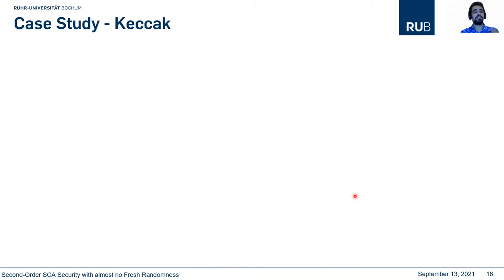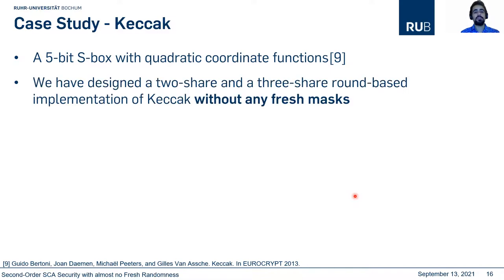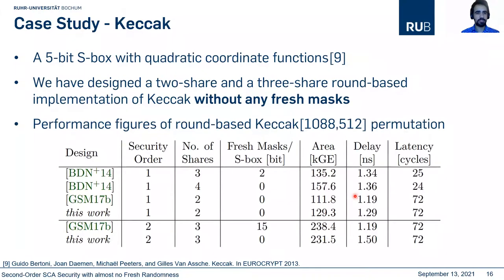As a case study, we applied our algorithm to KETCHOG. KETCHOG has a 5-bit S-box with quadratic coordinate functions. We designed a 2-share (first-order) and 3-share (second-order) round-based implementation of KETCHOG without any fresh masks. I would like to highlight that this is the first time a second-order secure KETCHOG without any fresh mask has been presented. The synthesis results show no fresh mask usage, roughly the same area overhead, but a slightly longer critical path.